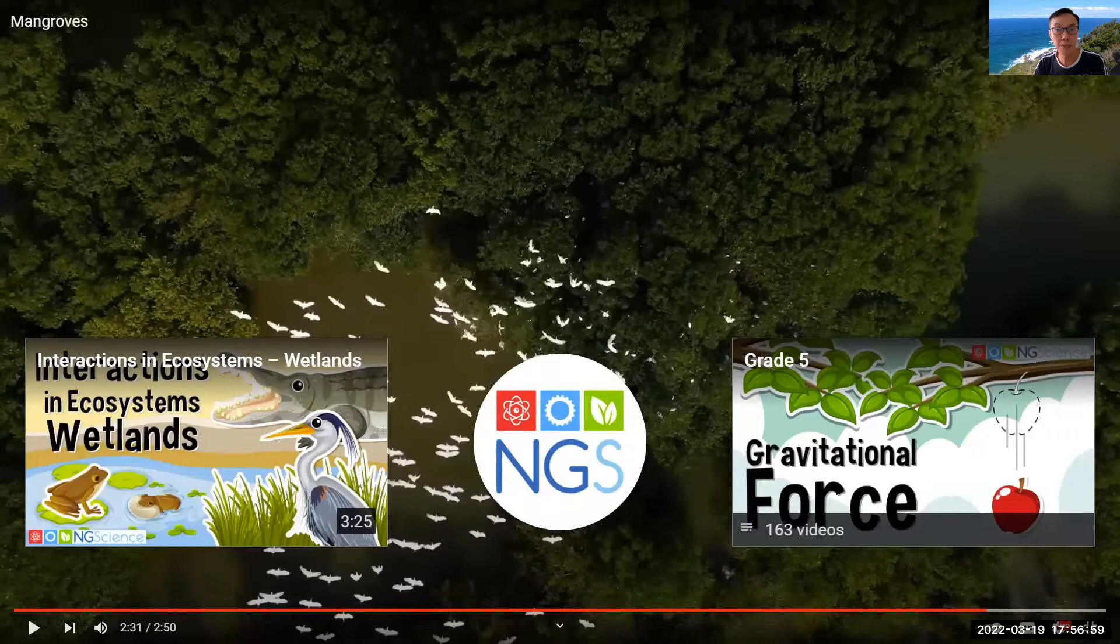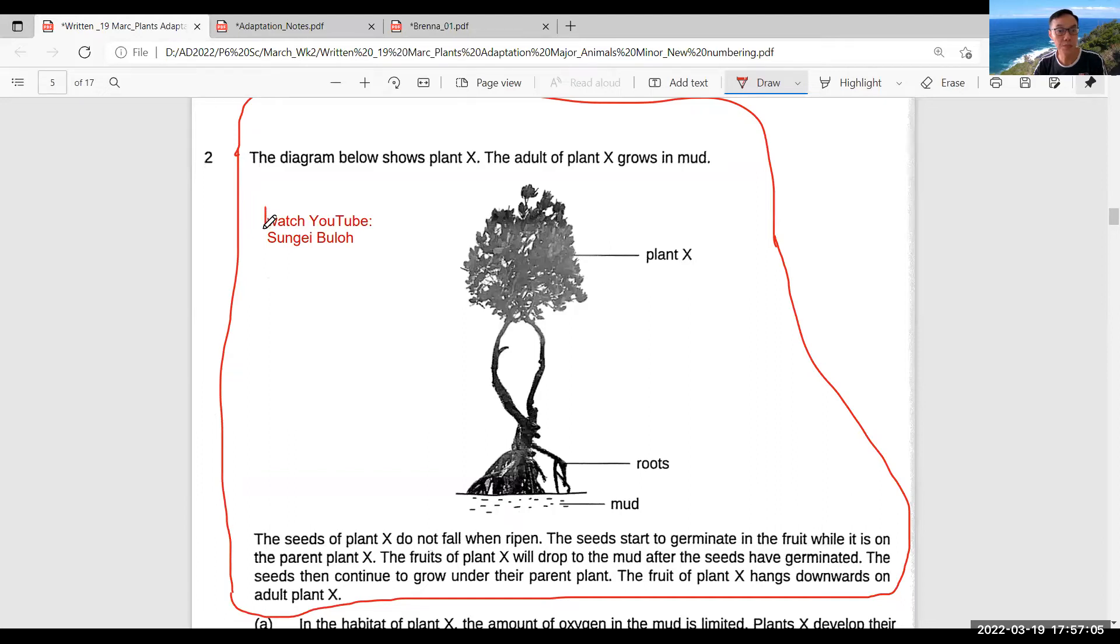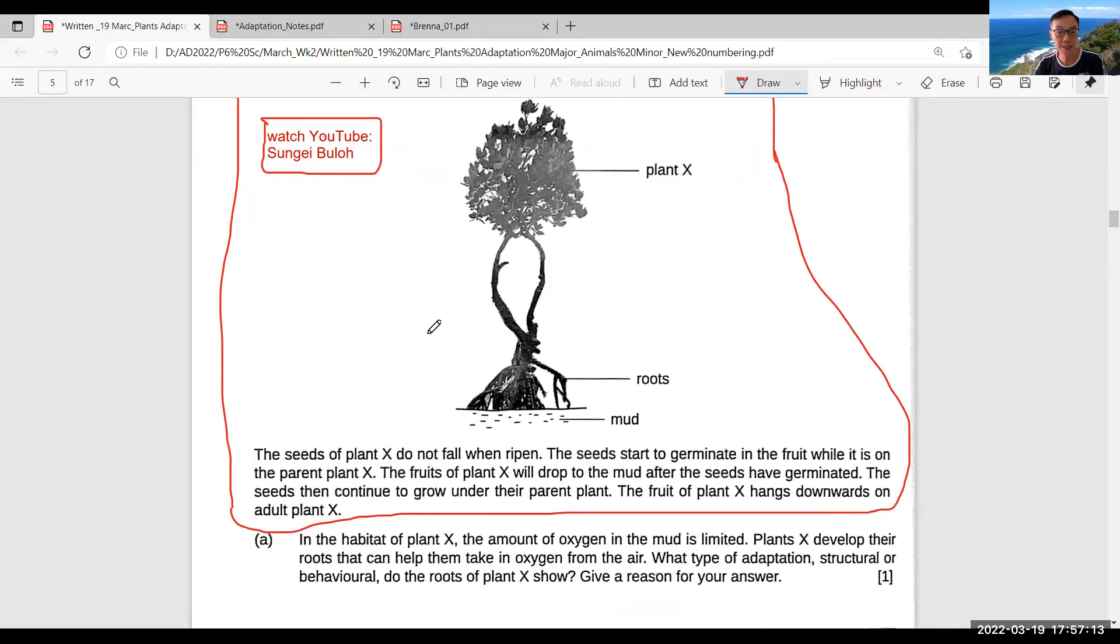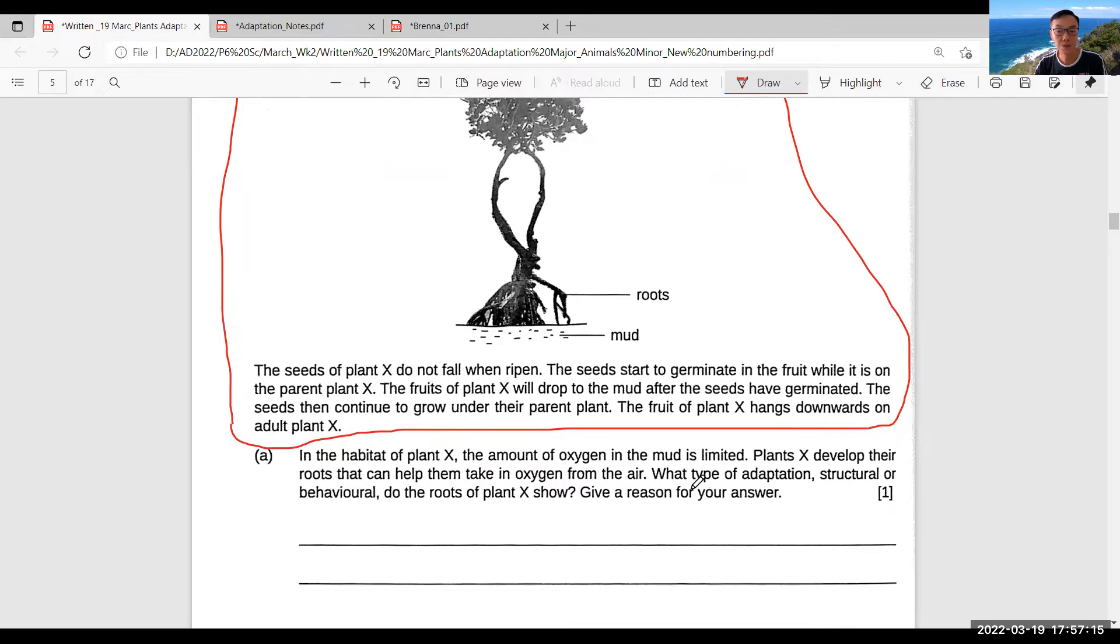I'll return back to the question. At your own free time, I want you to search at this—Singapore has this wetland reserve called Sungai Buloh. You can study some of the plants' adaptations there. By viewing the video, what type of adaptation is this, structural or behavioral, do the roots of plant X show?